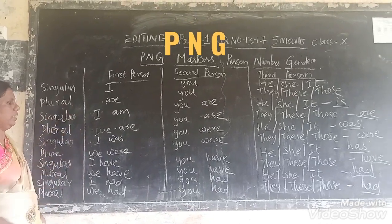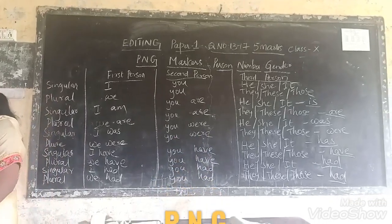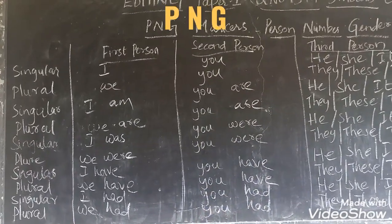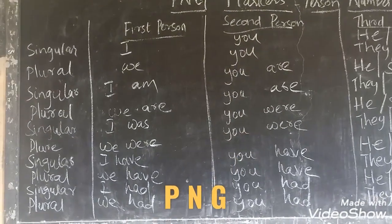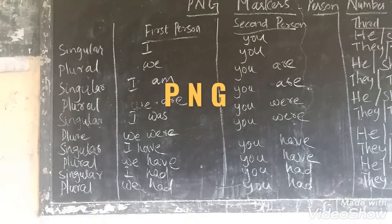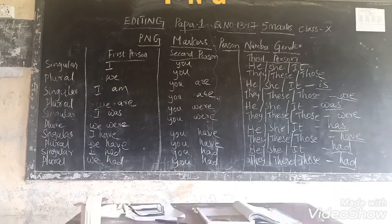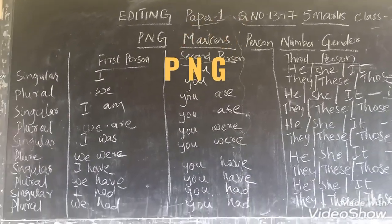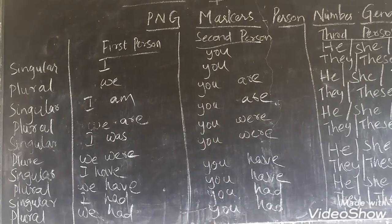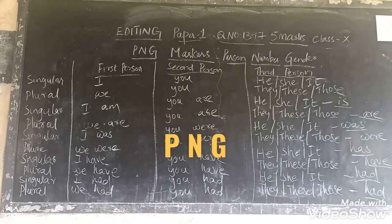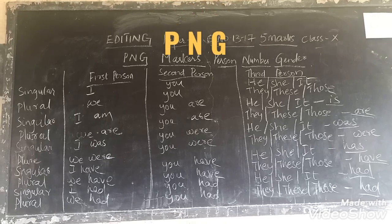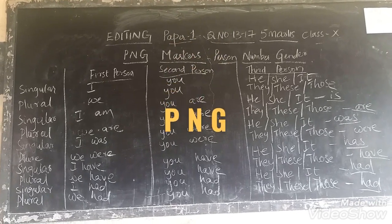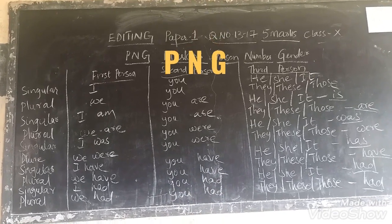Who is first person, who is second person, and who is third person? I is the first person. You is the second person. And he, she or it is the third person. Now let's see how we should use the verbs with each person. In singular, the first person is 'I' and the helping verb in present tense is 'am'. In plural, we use 'we are'. For second person, both singular and plural, it is 'you are'.